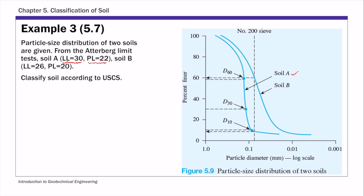In the classification, remember the step-by-step procedure we went over in the previous lecture. We're going to first find out the percentage of different types of particles — coarse-grained, fine-grained, gravel, and sand in the soil. This important number 200 sieve line corresponds to a particle size of 0.075 millimeters. Anything smaller than 0.075, anything finer than that, is classified as fine-grained soil — that's fines.